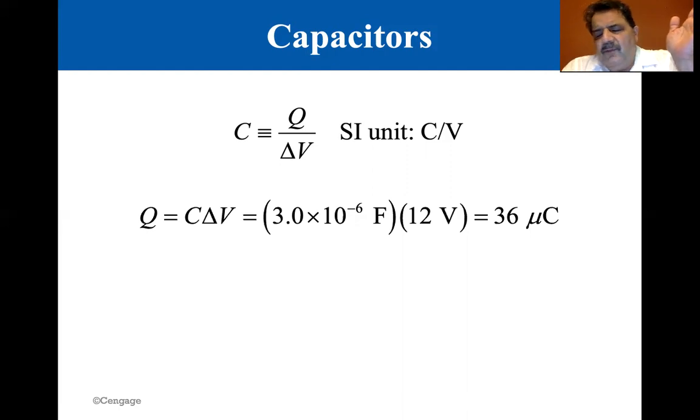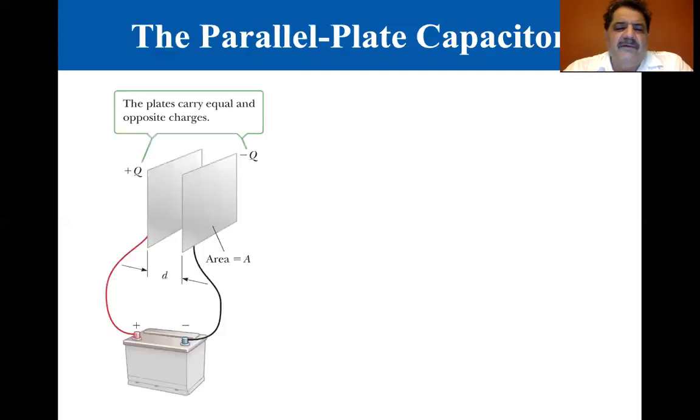A one-farad capacitor is a large capacitor, so we're going to be working with microfarads, nanofarads, and even picofarads, 10 to the minus 12. Right here, we have 3 times 10 to the minus 6 farads times 12 volts, and that's 36 times 10 to the minus 6 coulombs—that's 36 microcoulombs. So Q equals the capacitance times the voltage.